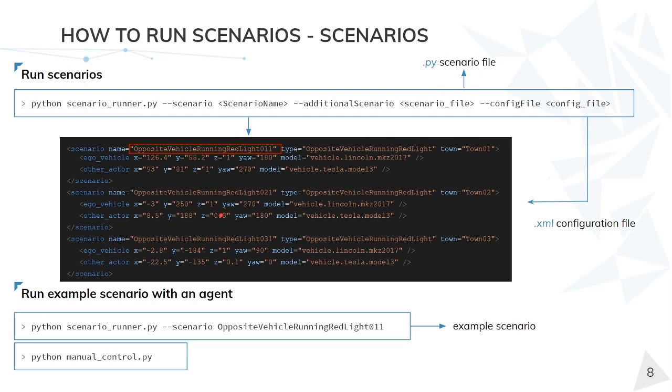Now, let's run an example. In this case, let's run opposite vehicle running red light. With this command, we are setting up the scenario, and to check its behavior, we're going to use the manual control.